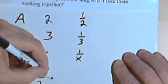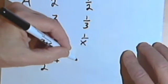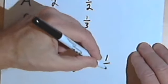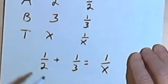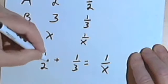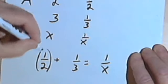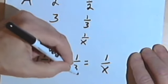So one-half plus one-third equals one over x. We're dealing with a rational equation, so we need a common denominator. We've got a two and a three and an x. So the common denominator is 6x. I want to multiply everything by that common denominator.